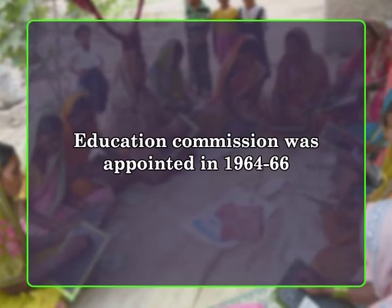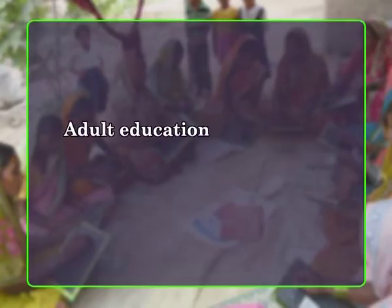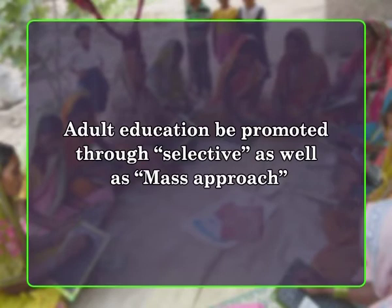In light of the constitutional directives, the Education Commission was appointed in 1964 to 1966, which recommended that high priority be accorded to the liquidation of illiteracy and urged that adult education should be promoted through selective as well as mass approaches. The Education Commission also stated that in the world of science and technology, the main objective of education should be to relate it to the life needs and aspirations of the people so as to make it an instrument for socio-economic and political change.